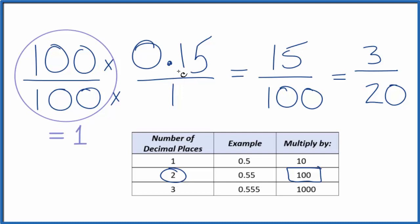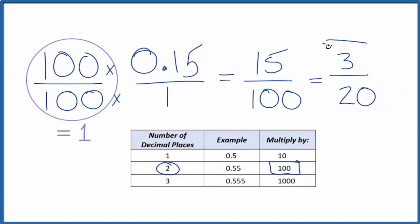So 0.15, the decimal, if we write this as a fraction, we could write it as 3 over 20. And we can't reduce this any further. So that's how you convert the decimal 0.15 to a fraction. This is Dr. B, and thanks for watching.